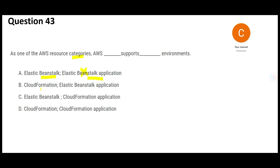Option B says AWS CloudFormation supports Beanstalk applications and environments. Yes — you can put Beanstalk as a resource category in a CloudFormation template, and CloudFormation will create the service required. This looks correct. Option C says use Beanstalk to create CloudFormation — that's the reverse and is not possible. Using CloudFormation you can create Beanstalk infrastructure, but not the other way around.